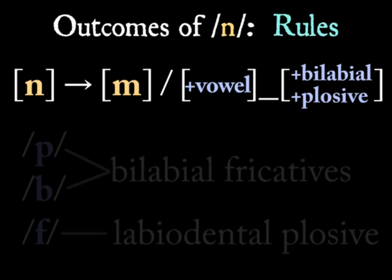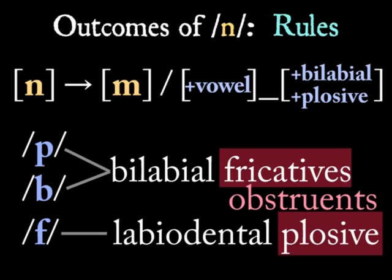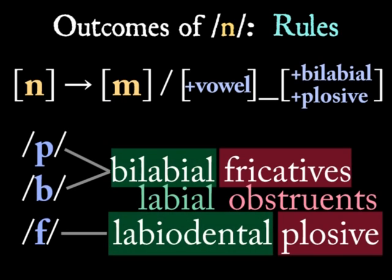First, notice that both fricatives and plosives are obstruents, meaning that you highly restrict the airflow when you make them. Also, both labiodentals and bilabials are labial sounds, so named because they involve the lips. What if we broaden our rule a bit?